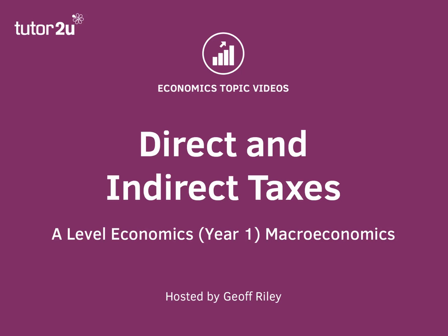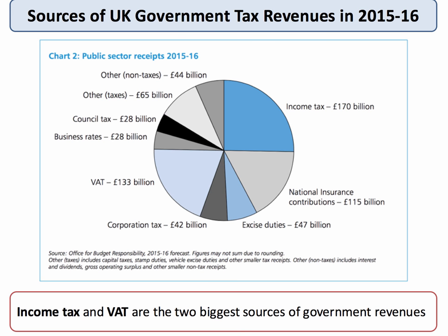Hi there, this is a topic video covering direct and indirect taxes. Here's a chart showing the main sources of UK government tax revenue in the financial year 2015-2016, and you can see pretty clearly that income tax and VAT are easily the two biggest sources of tax revenue coming into the British government.